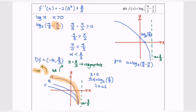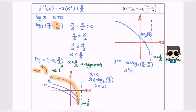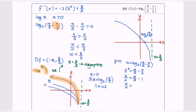Converting to index form, 3 to the power of 0 equals 4/3 minus x/2. Rearranging, x/2 equals 4/3 minus 1, so x/2 equals 1/3. Finally, x equals 2/3. So the x-intercept is at 2/3.